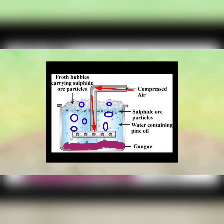The lighter particle, like metals, moves up. It floats on and heavier particles, like gangue, that is impurities settled down in this method.